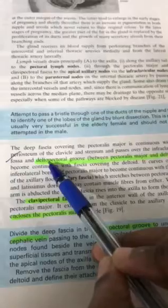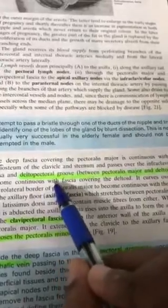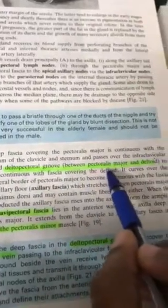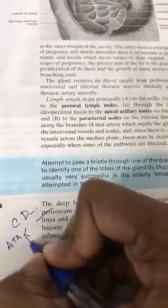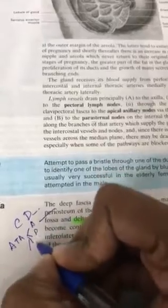The deltopectoral groove lies between the pectoralis major and the deltoid muscles. Its contents are 'C' and 'D': C for cephalic vein, and D for the deltoid branch of the acromiothoracic artery. The branches of the acromiothoracic artery are A, P, C, D — acromial, pectoral, clavicular, and deltoid.